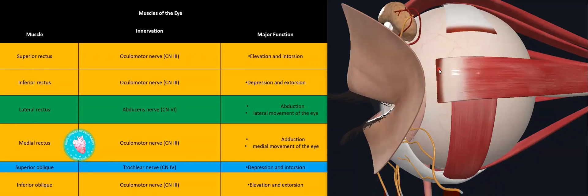All recti are supplied by oculomotor apart from the lateral rectus. This lateral rectus is supplied by the abducens nerve, because it is doing abduction.